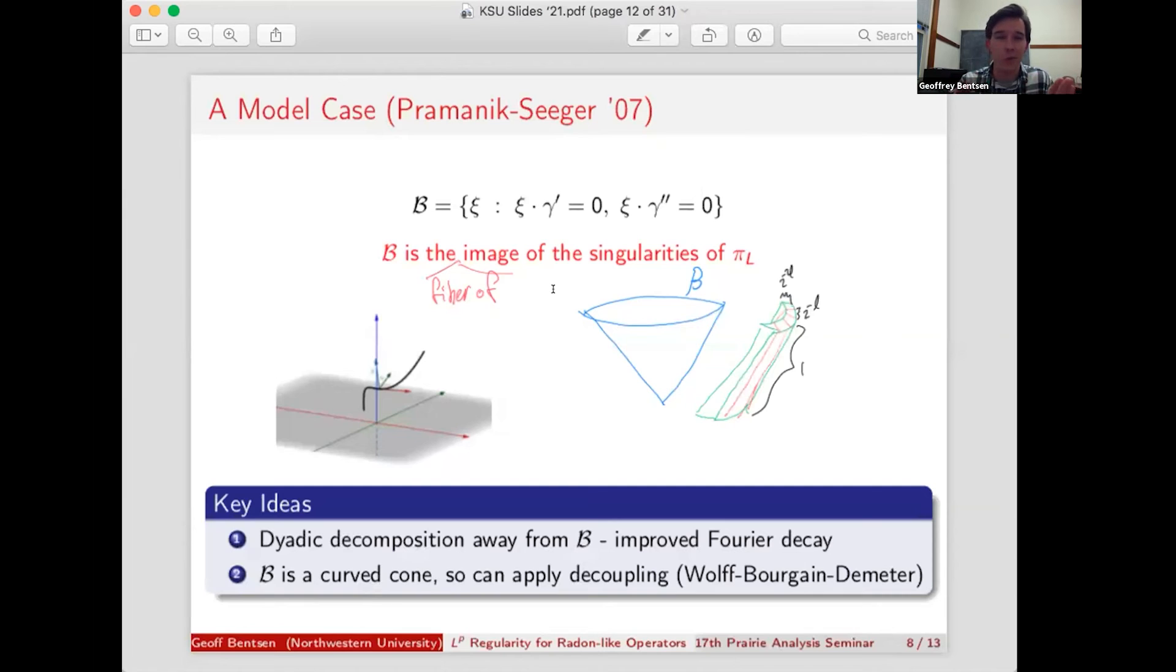What we're looking for is trying to figure out what assumptions we can put on a local radon-like operator so that these key ideas can be extrapolated. And one of the conditions that seems necessary is that the maps pi L and pi R, at least one of them should have fold singularities. So we know that they can't be diffeomorphisms, they have to have some singularities, but kind of fold singularities are the best kind of singularities that you can hope for. And it's true that this operator T, both pi L and pi R have fold singularities.